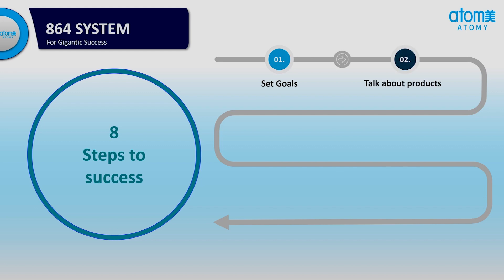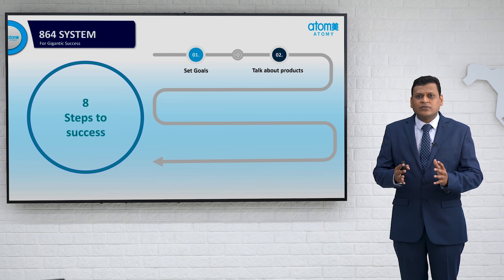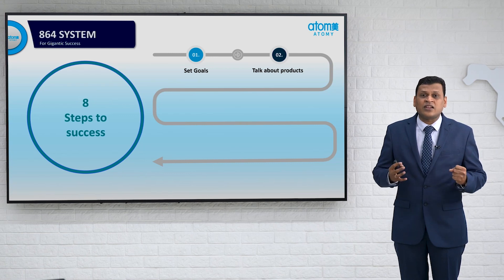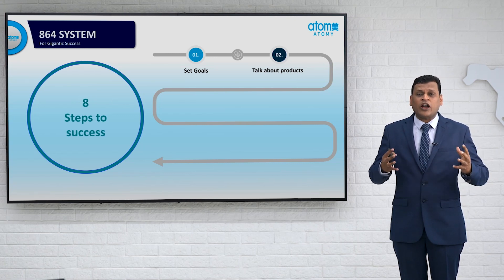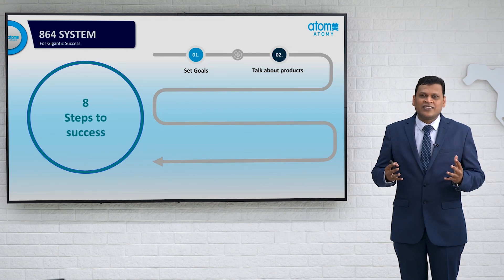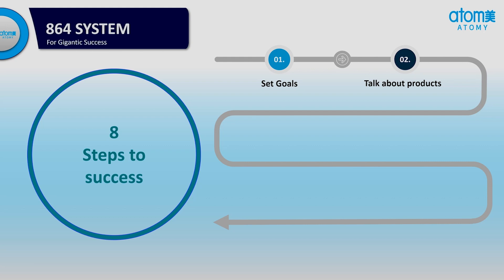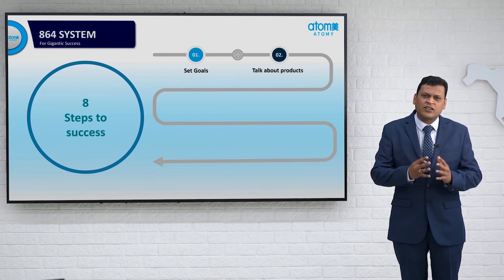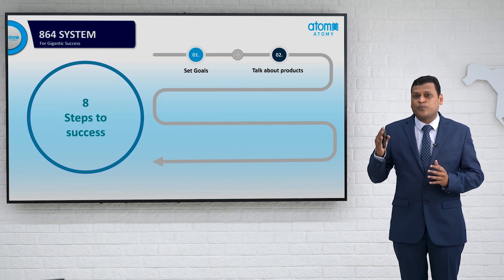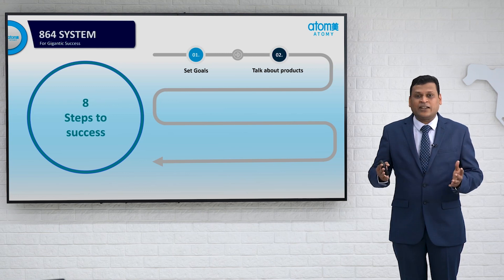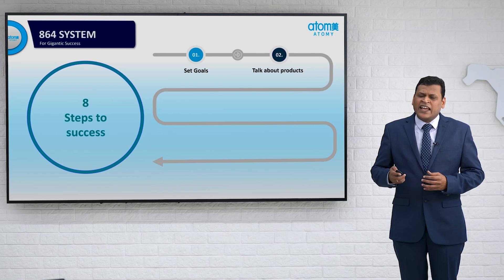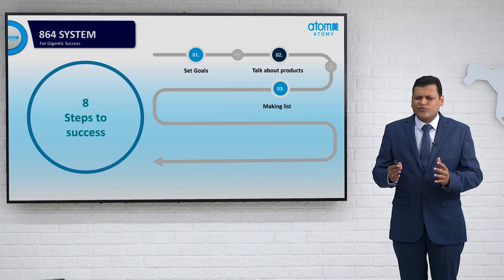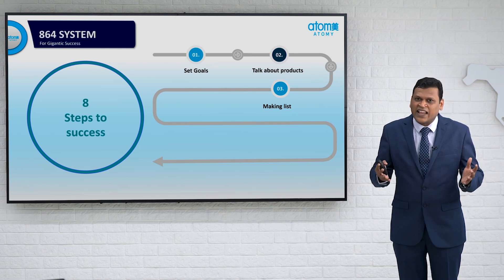The next step is about products. Our company is a product-based company; the product is the heart of our system. If we don't talk about the product, it is not good at all. Our products are of absolute quality and at an absolute price. The next step is to make a list. Making a list is very simple — everybody feels that way.